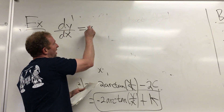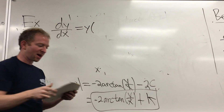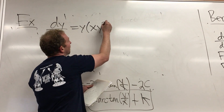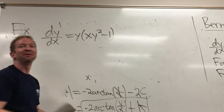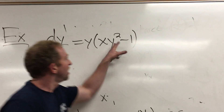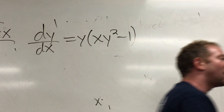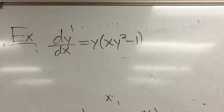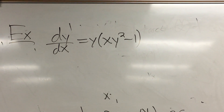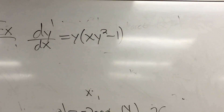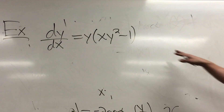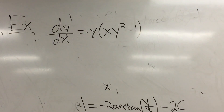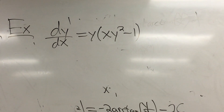dy/dx is equal to y times (xy² - 1). This is kind of like a hidden Bernoulli — you see the y squared? It could be Bernoulli, but it's not written in that form yet. So the first thing you want to do when you see something like this, where it looks like it could be Bernoulli, is make it look like that.